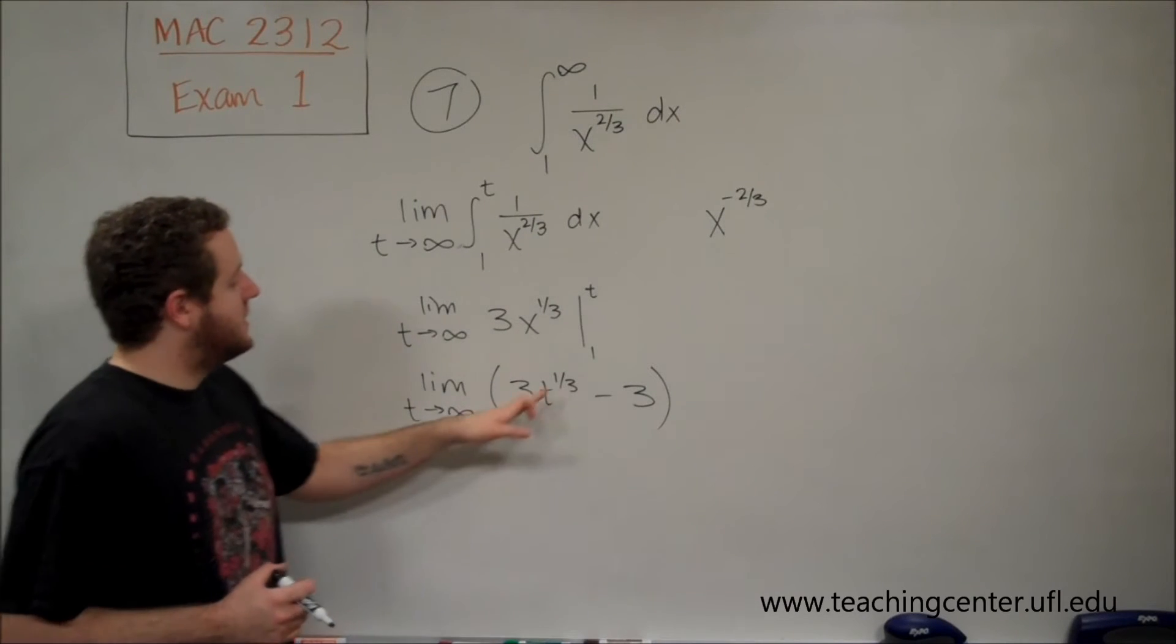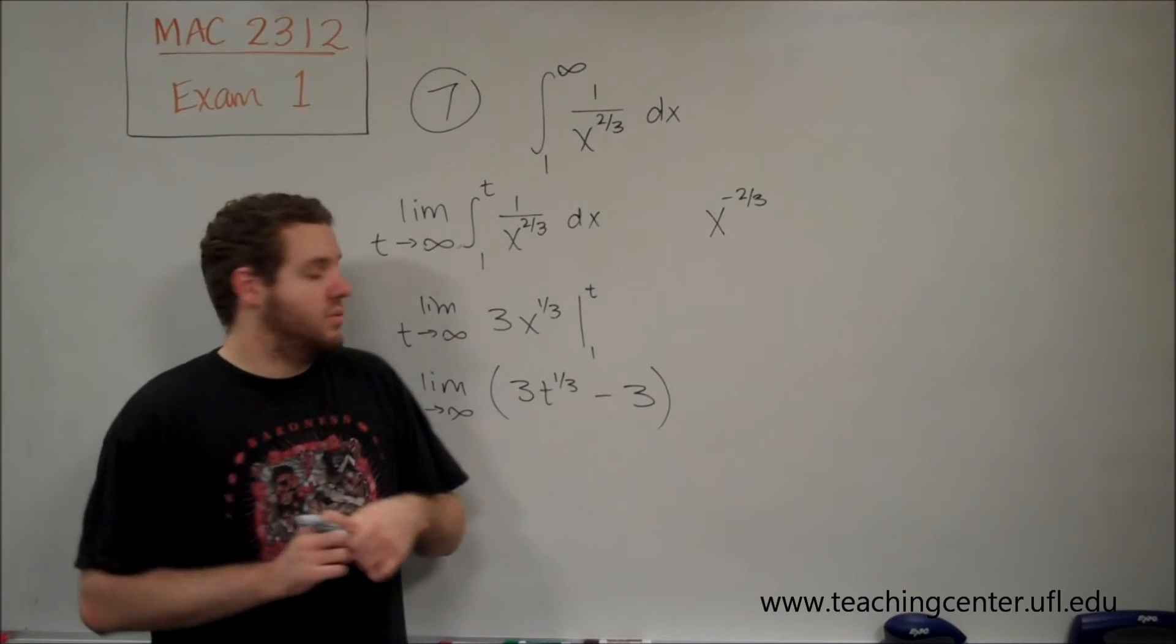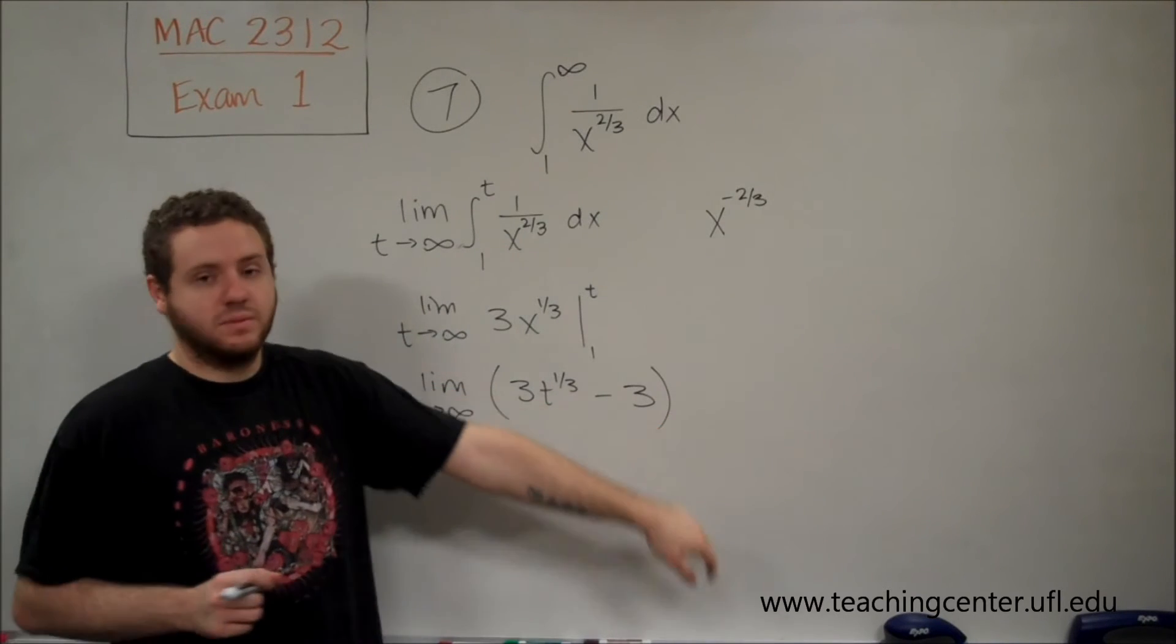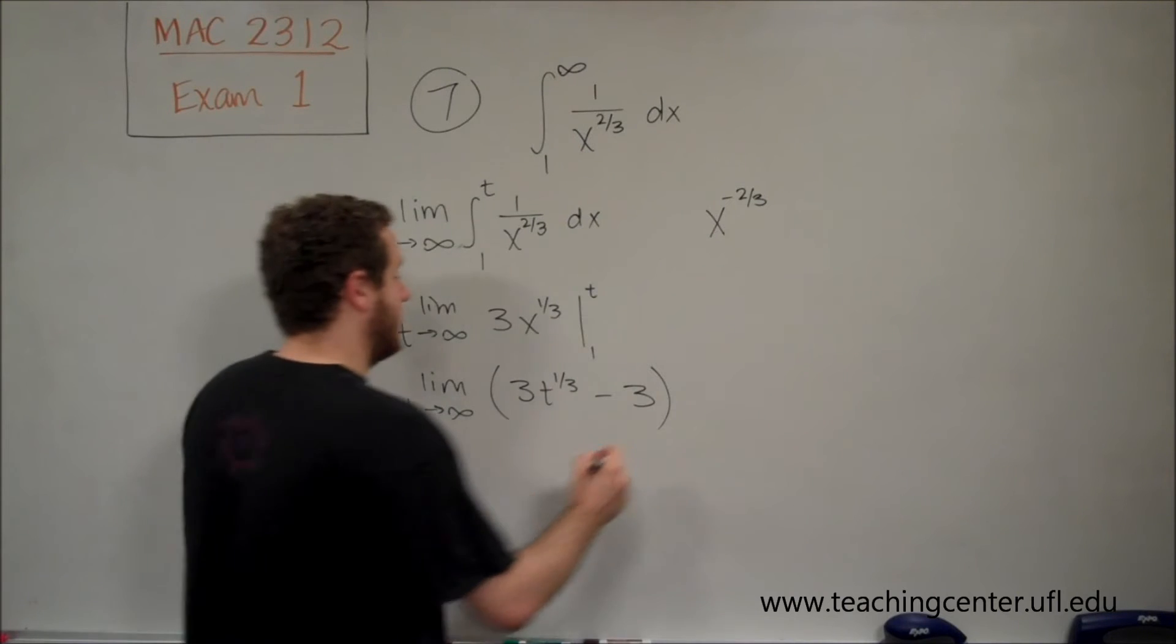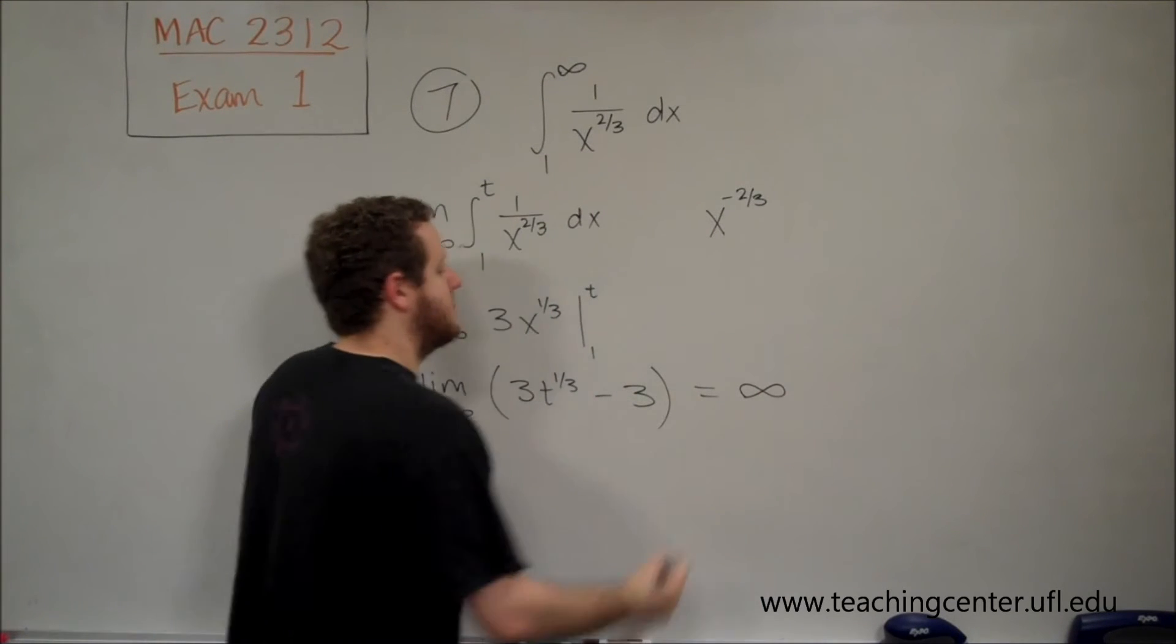You can see what happens here is that we're doing 3 times the cube root of t minus 3. But as t goes to infinity, the cube root of infinity is still infinity. So we get an infinite term minus 3, which is still an infinite term.